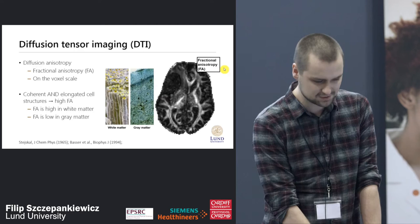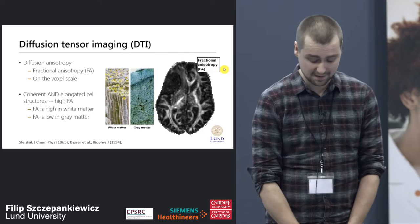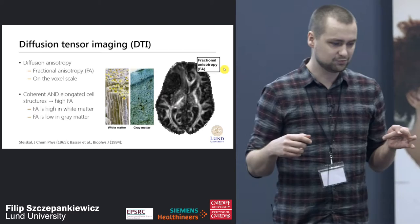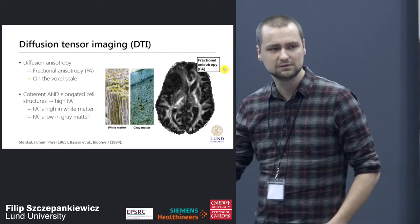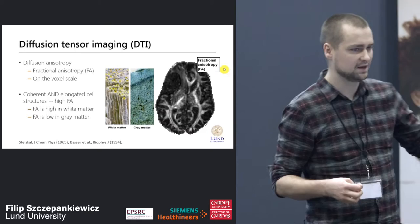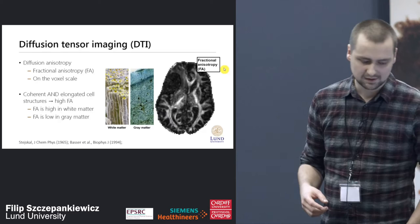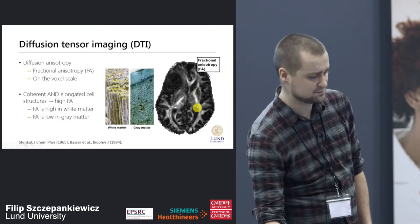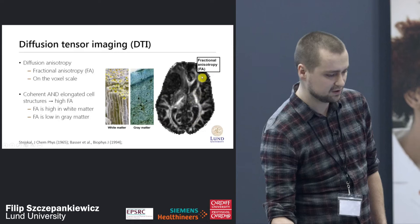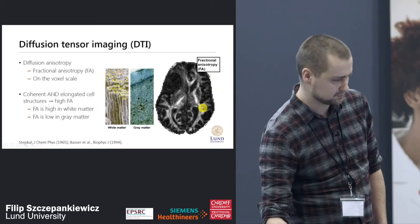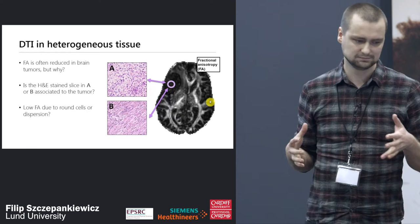Let's ground ourselves in diffusion tensor imaging, which gives us diffusion anisotropy estimated usually in terms of the fractional anisotropy — that is the anisotropy of diffusion on a voxel scale. In tissue, if we have coherent tissue which has some reason to generate anisotropy we get a high FA, and in some tissues we get a low FA. In this brain map, the white matter regions might be coherent white matter, while the dark crossing regions are due to crossing and orientation dispersion.